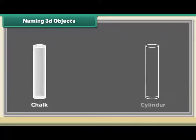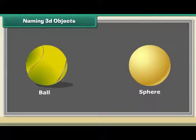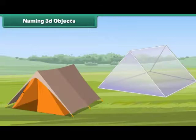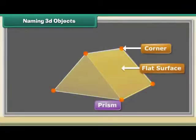A chalk is a cylinder. It has a round surface and two flat surfaces. A ball is a sphere. It has a round surface. A tent is a prism. It has corners and flat surfaces.